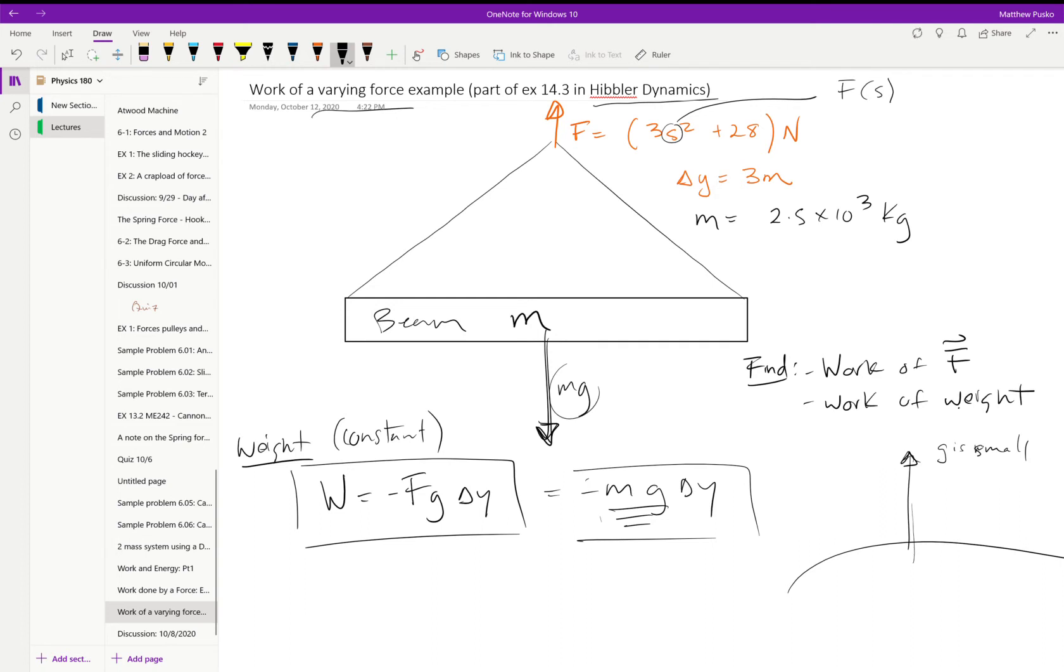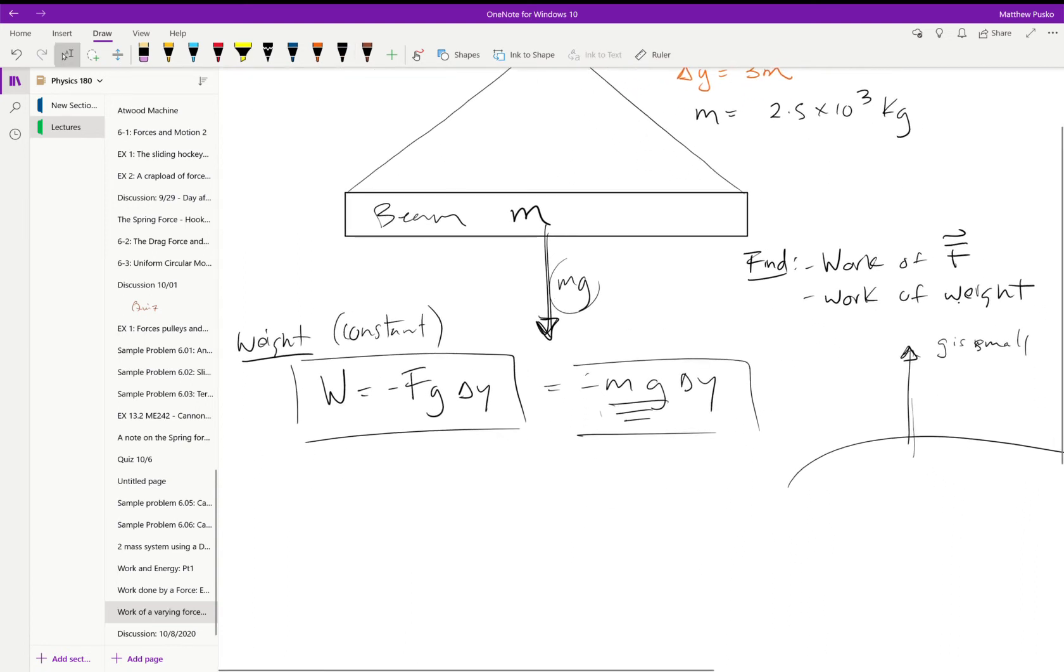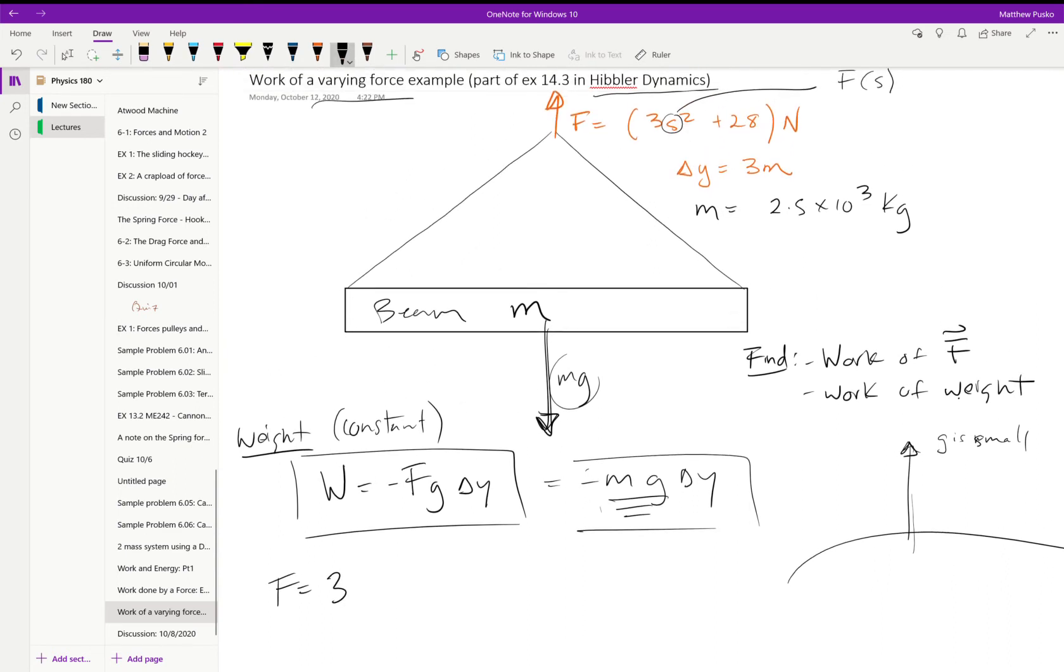Let's look at this varying force, though. How much work is this varying force doing? So let's copy it down. We have force is equal to 3s squared, where s is the displacement, plus 28 newtons.